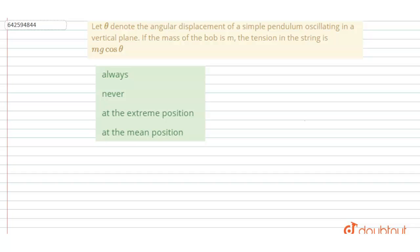Let theta denote the angular displacement of a simple pendulum oscillating in a vertical plane. If the mass of the bob is m, when will the tension in the string be mg cos theta? Let's draw the diagram first.